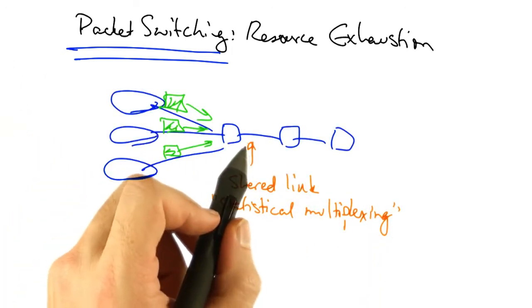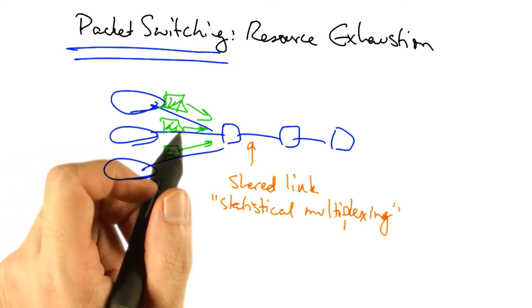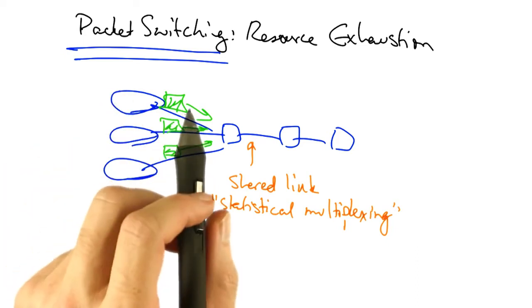In a packet switch network, a link may be shared by multiple senders at any given time, using statistical multiplexing, as we learned in previous lessons.